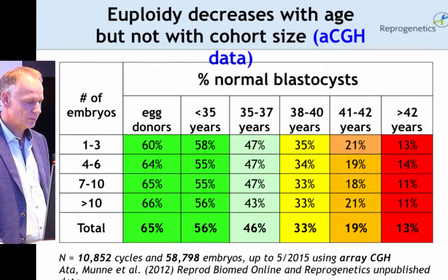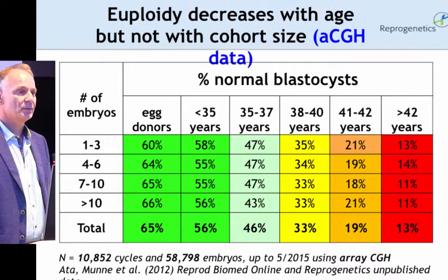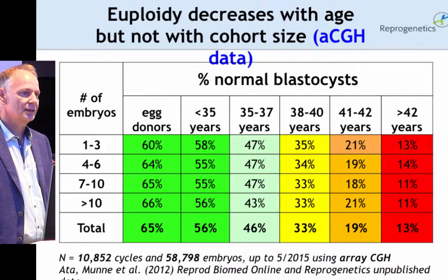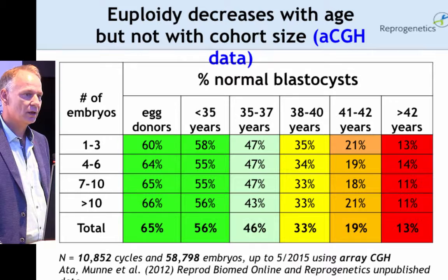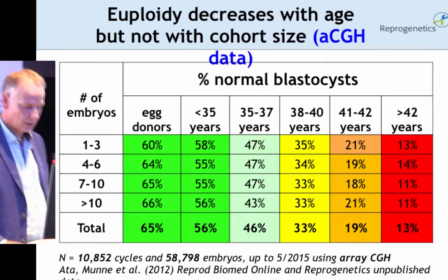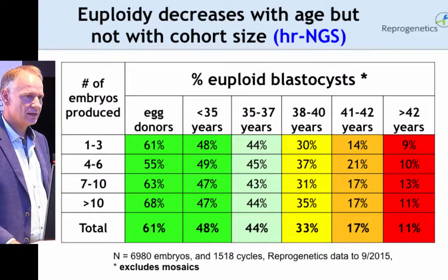These are a summary of thousands of embryos — more than 60,000 embryos analyzed by aCGH. As you can see, there is a significant decrease in the number of normal embryos with maternal age analyzed, from 65% to 13%. What's interesting is that there is no difference in chromosomal abnormalities depending on cohort size, so it doesn't matter how many embryos are produced — you get the same rate of chromosome abnormalities in every age group.